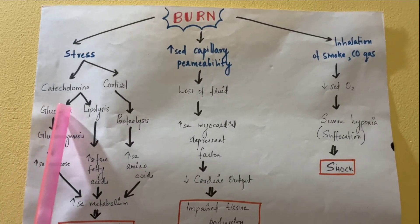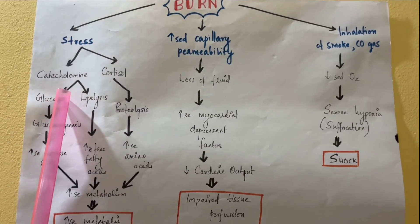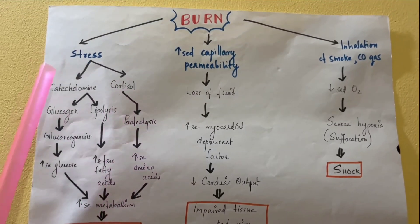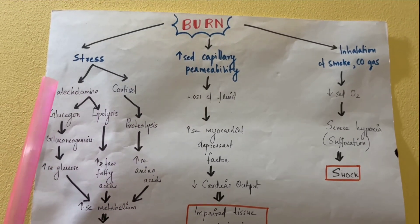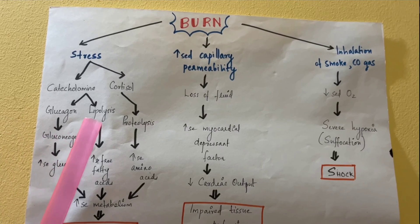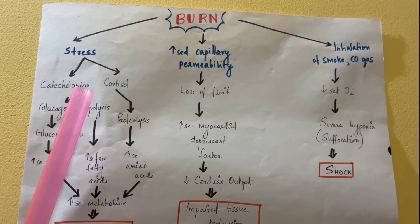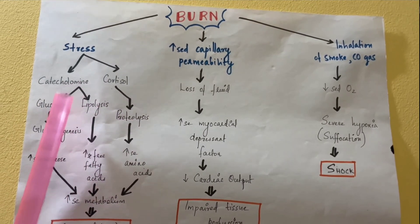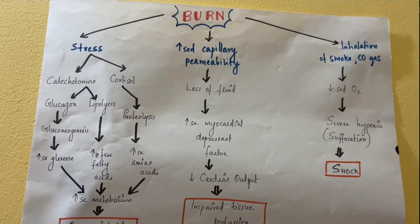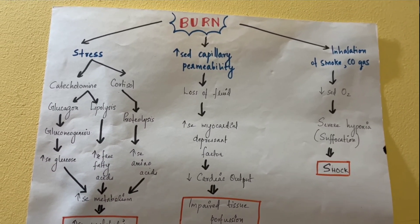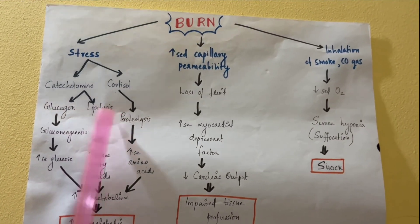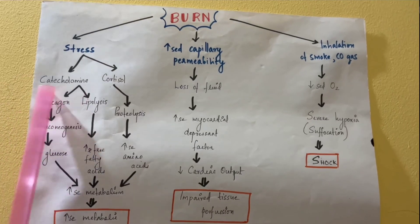Stress occurs because our body releases catecholamines and cortisol. Along with this, glucagon is also released. These hormones trigger lipolysis — 'lipo' meaning lipid and 'lysis' meaning breakage. So lipolysis and glucagon release are key components of the stress response in burns.